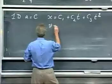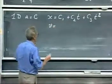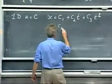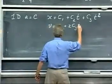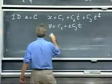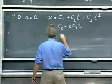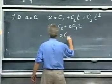I can now take the derivative, and so I get c2 plus 2c3 times t, and then I get the acceleration equals 2c3.